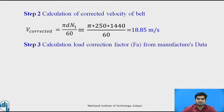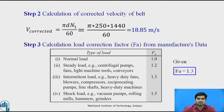In step number 3, calculate the load correction factor Fa from the manufacturing data. The problem statement already gives us Fa = 1.3. If it were not given, you would refer the table from the data book and look up the application type. For a compressor, the correction factor is 1.3.